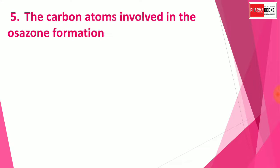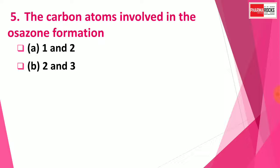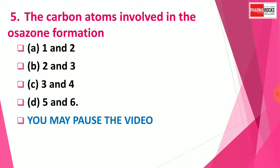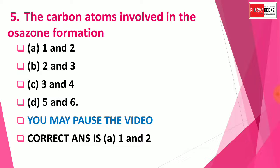Question 5: The carbon atoms involved in osazone formation are — Option A: One and two, Option B: Two and three, Option C: Three and four, Option D: Five and six. You may pause the video to think about the answer. The correct answer is Option A: One and two. Carbon atoms 1 and 2 are involved in osazone formation.